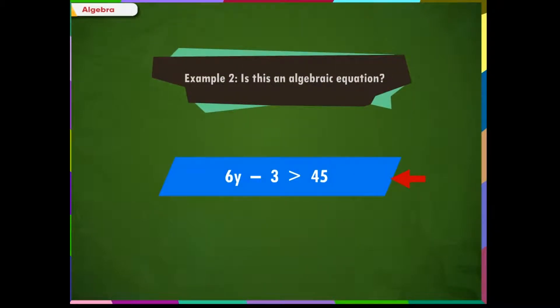Example 2: Is this an algebraic equation? 24 divided by 4 equals 6. No, this is not an algebraic equation as it doesn't contain a variable.